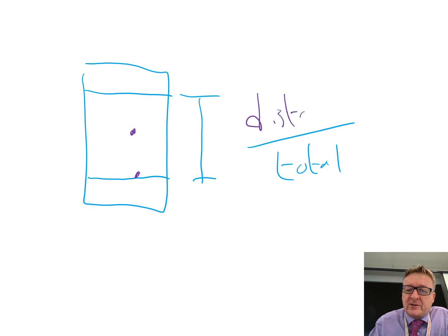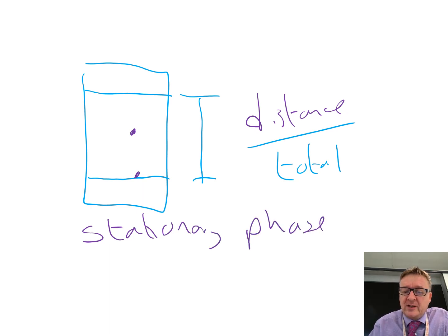Just an extra bit of information: you've got two phases. You've got the stationary phase, which is literally the piece of paper. And you've got the mobile phase, which is when the actual inks are moving based on their solubility up the piece of paper.